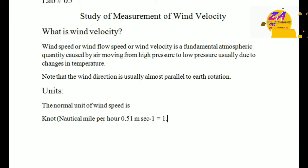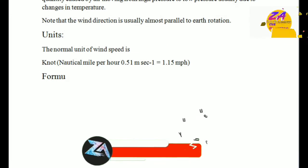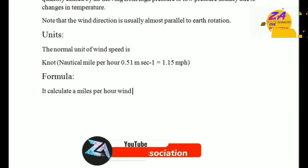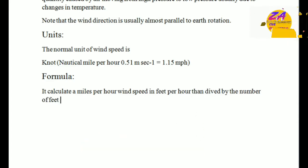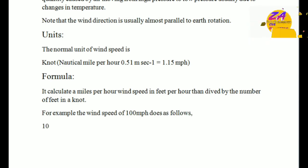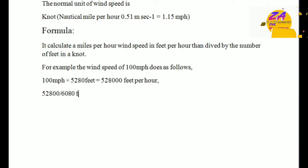Nautical miles per hour — 0.5 meter per second is equal to 1.15 mph. To calculate miles per hour, take the wind speed in feet per hour then divide by the number of feet in a knot. For example, a wind speed of 100 meters per hour: 100 multiplied by 5,280 feet equals 528,000 feet per hour. This is the calculation used to determine the speed.